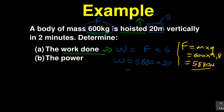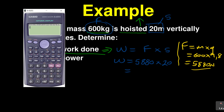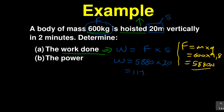Taking 5,880 times the distance of 20 meters gives us 117,600. Work done is measured in joules, so the answer is 117,600 joules. You can divide by 1,000 to get 117.6 kilojoules. That was part A.